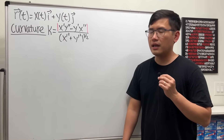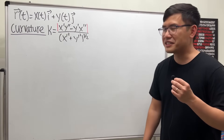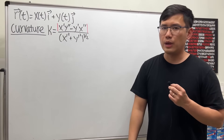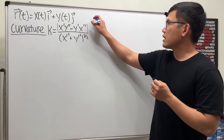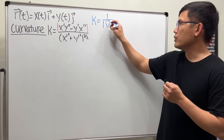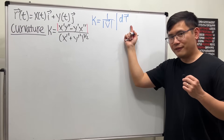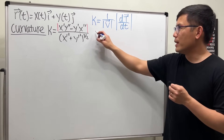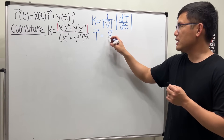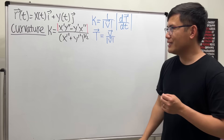I saw a very nice formula on Wikipedia about the curvature of a curve in the plane, but it didn't give any proof — that's okay, I'll do it right here. Here we have our vector function, and this is the formula for the curvature we want to end up with. Curvature kappa equals one over the magnitude of the derivative — think of this as velocity — times the magnitude of the derivative of the unit tangent vector with respect to t.